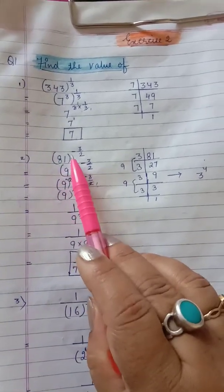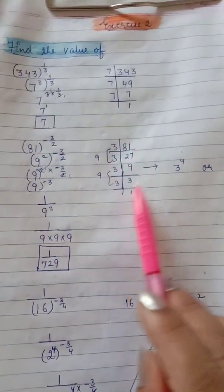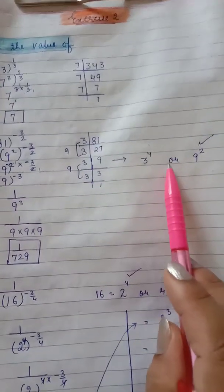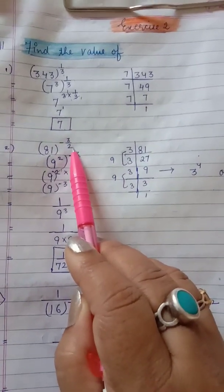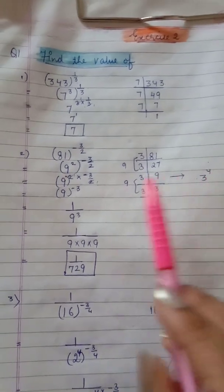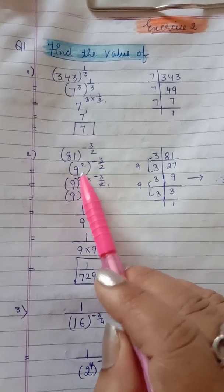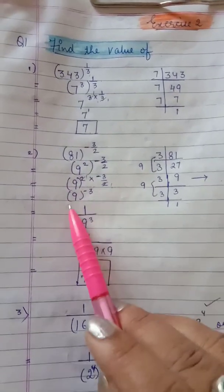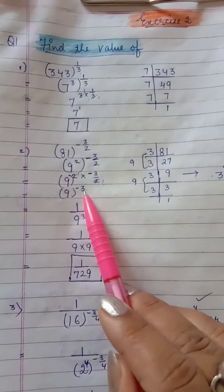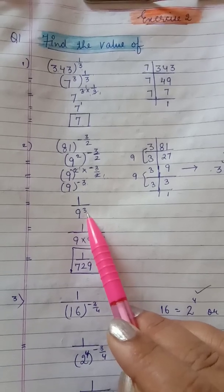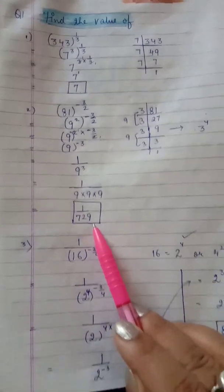2nd part: 81 to the power minus 3/2. Again a fractional power — change your base into exponential form. It can be written as 3 to the power 4 or 9 to the power 2. I'll prefer taking 9 to the power 2 because the outer power is 2. So 9 to the power 2, second power minus 3/2 — 1 base, 2 powers, powers to be multiplied. 2 and 2 get cut, leaving 9 to the power minus 3. Negative power — reciprocate your base, power becomes positive: 1/9³ = 1/729.